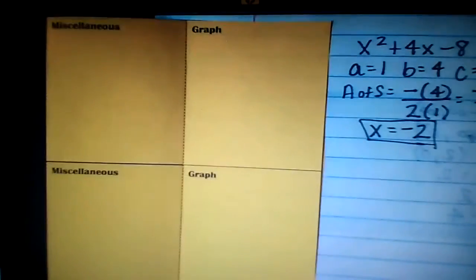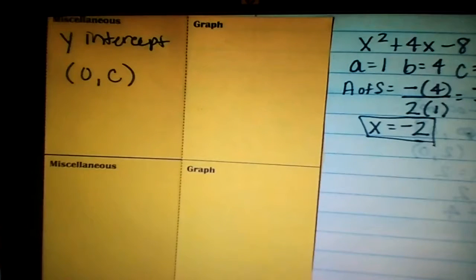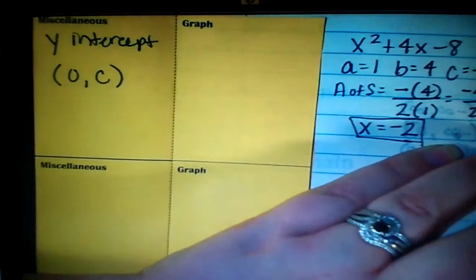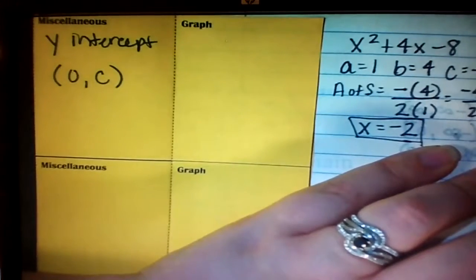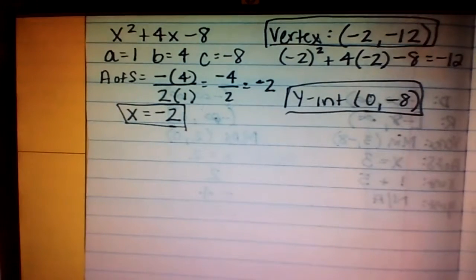Some miscellaneous information you can get from this graph. You can get the y-intercept. And your y-intercept is always 0, comma, your c-value. So when it's in standard form, it's always 0, comma, your c-value. So in my example, my y-intercept should be 0, comma, negative 8. So your y-intercept is 0, comma, negative 8, because your c-value was negative 8.